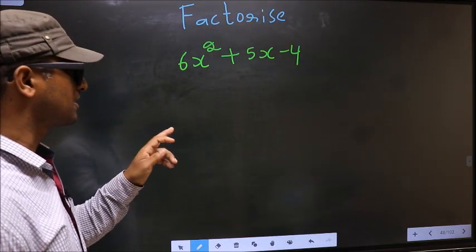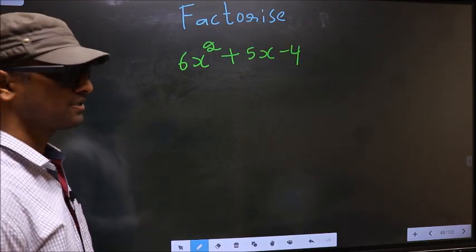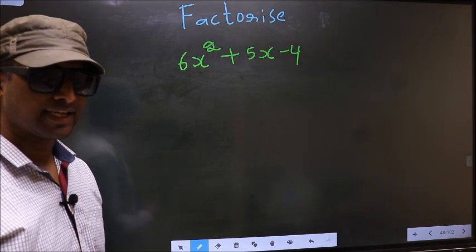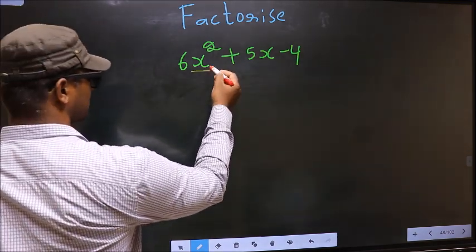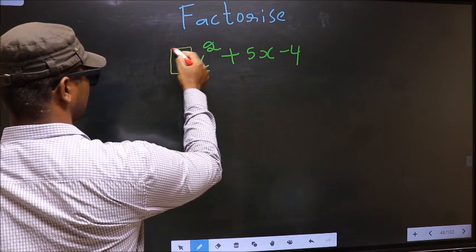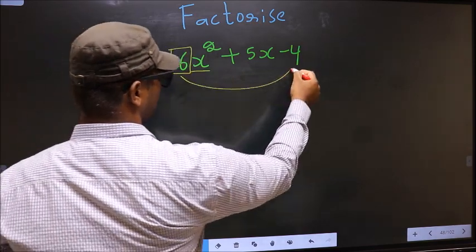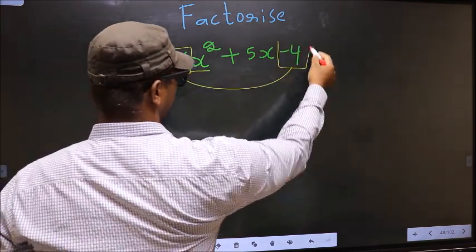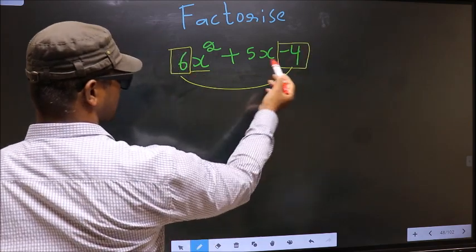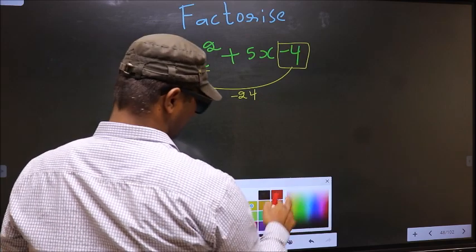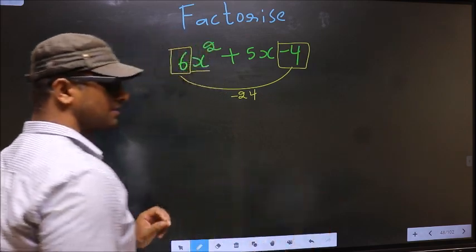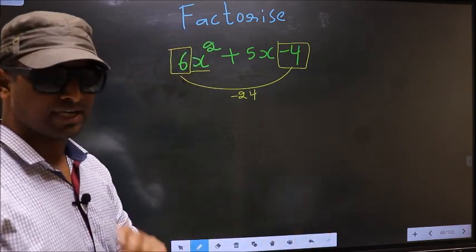Factorize 6x² + 5x - 4. To factorize, step 1: the coefficient of x² (that is 6) should be multiplied to the constant (that is -4). So 6 into -4 is -24. This is your step 1.